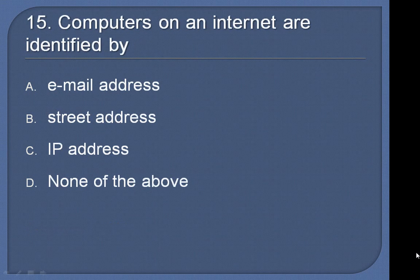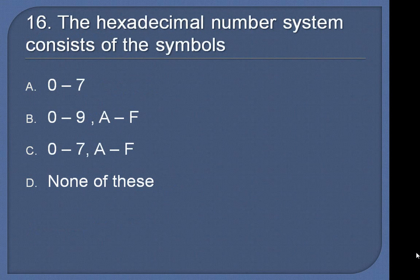Question 15: Computers on an internet are identified by: email address, street address, IP address, or none of the above? Answer: IP address.